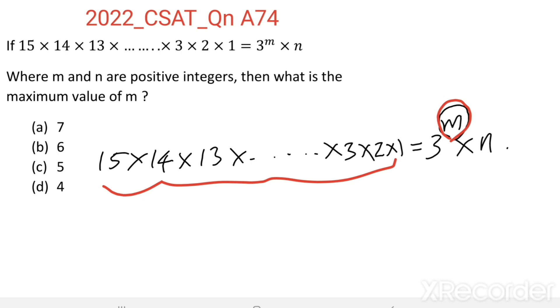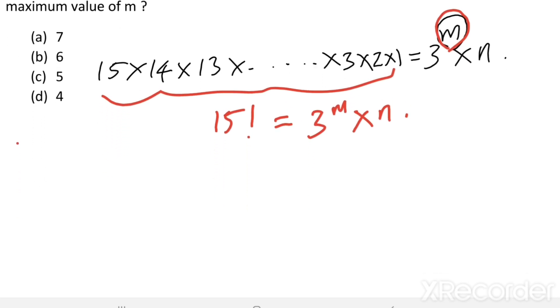We know that 15×14×13×12×...×1 is 15 factorial. So 15! = 3^m × n. To find the maximum power of 3 in 15 factorial...